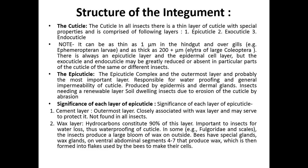The structure of the cuticle: in all insects there is a thin layer of cuticle with special properties composed of the epicuticle. The thinnest layer is about one micrometer, present in the hindgut and over the gills of Ephemeroptera. There is always an epicuticle layer, but the exocuticle and endocuticle may be greatly reduced to absent in particular parts of the cuticle of the same or different insects.